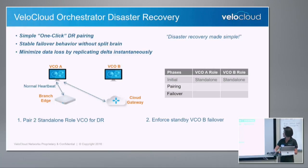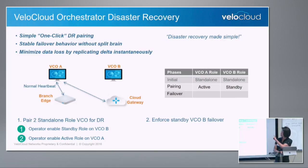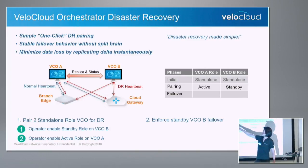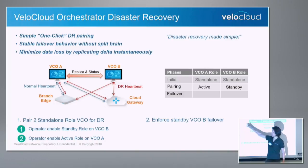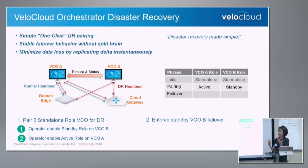Now I have an operating deployment and I would like to do the pairing. The operator does two simple things: first, log into the standby VCOB to initiate DR and make it a standby; second, on VCOA, which is the original standalone, enable it to be active. At this point, VCOB recognizes VCOA, they establish a tunnel, and start data replication as the status changes. All the edges will get the message and start talking to both VCOA and VCOB with DR status, so the edges will know who is their active and who is their standby.